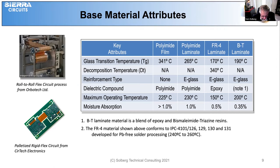BT laminate is a very stable material. The FR4 material noted in IPC 4101 — specifications 126, 29, 30, and 31 — are developed for lead-free solder processing, reaching temperatures above 240 degrees C.